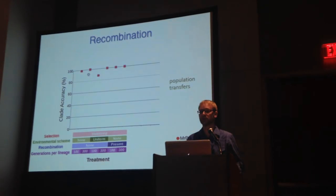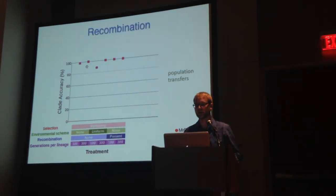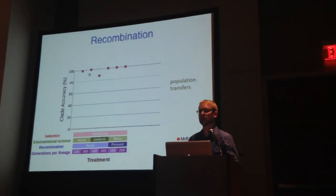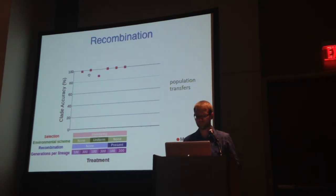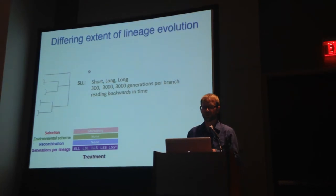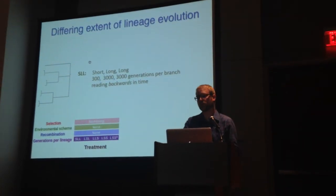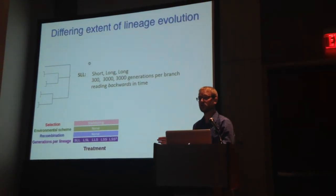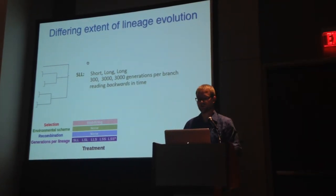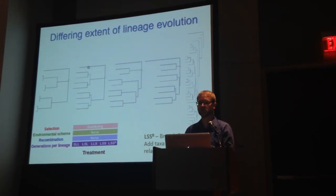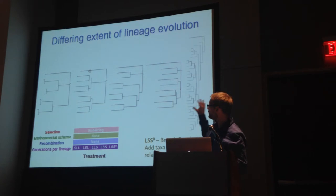When we added recombination — at least how recombination works right now in AVIDA — we didn't see any effect. When recombination is working we also have population transfers, so we can have lineage sorting effects and other things at play. We then varied the extent of evolution across the tree by varying branch lengths. I abbreviated these different conditions as short or long, reading backwards in time. So SLL is 300 generations, 300 generations, and then 3,000 generations — really long internal branches deep in the tree. We varied the number and placement of long branches in the tree.